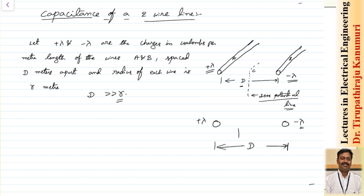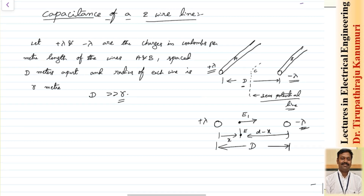Let us consider a point at distance x from the first conductor, so with respect to the second conductor it will be d minus x. At this point, we want to find the electric field. Due to the first conductor (positive charge), the electric field will be directed from the positive charge towards the negative charge. Due to the second conductor (negative charge), the electric field at this point will also be in the same direction — it will be attractive, in the same direction.